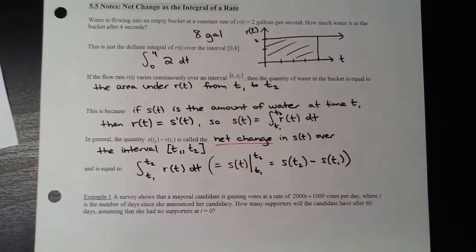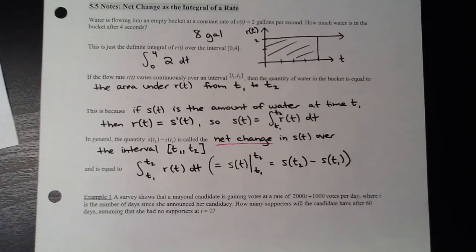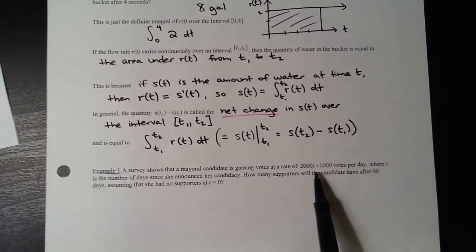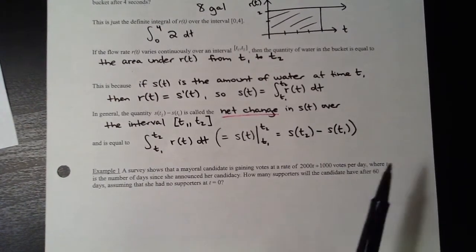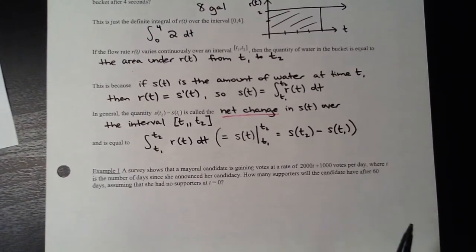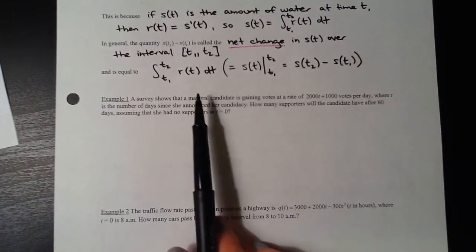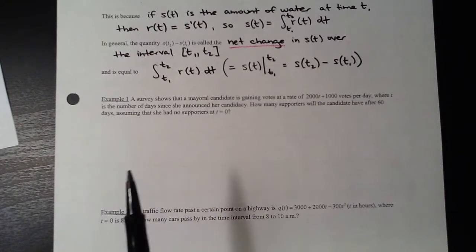This is a lot of theoretical stuff. The examples will really help make sense of it. Example one: a survey shows a mayoral candidate is gaining votes at a given rate, where T is the number of days. How many supporters will she have after 60 days, assuming she had no supporters at T equals zero? That initial value is important — it helps us find the net change.